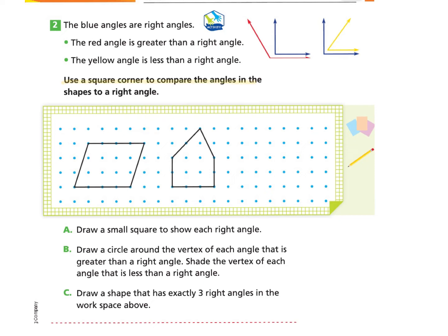Use a corner square to compare the angles in the shapes to a right angle. We're going to get another piece of paper and compare the angles in the shapes. We're looking at whether each angle is smaller, bigger, or exactly a right angle. Part A asks to draw a small square to show each right angle. When I look at the first polygon, I do not find any right angles.